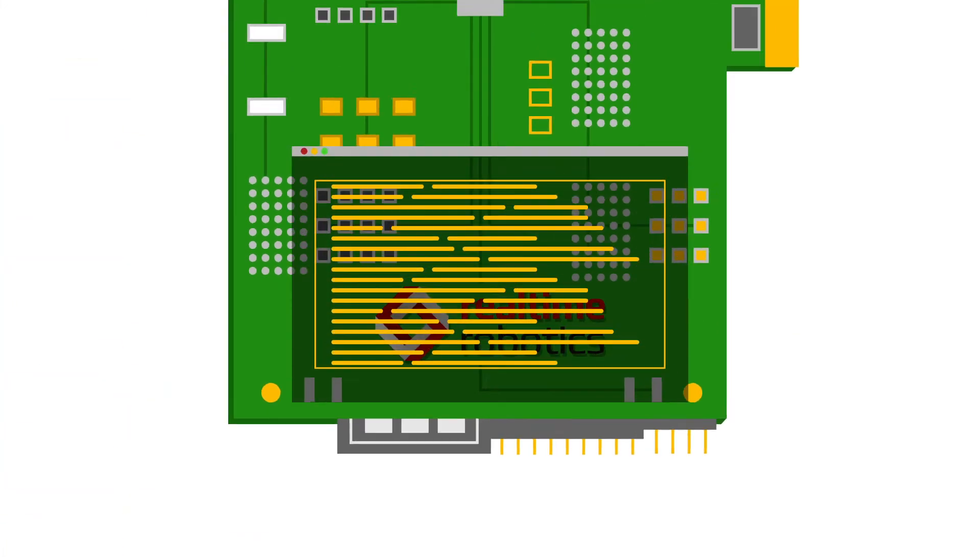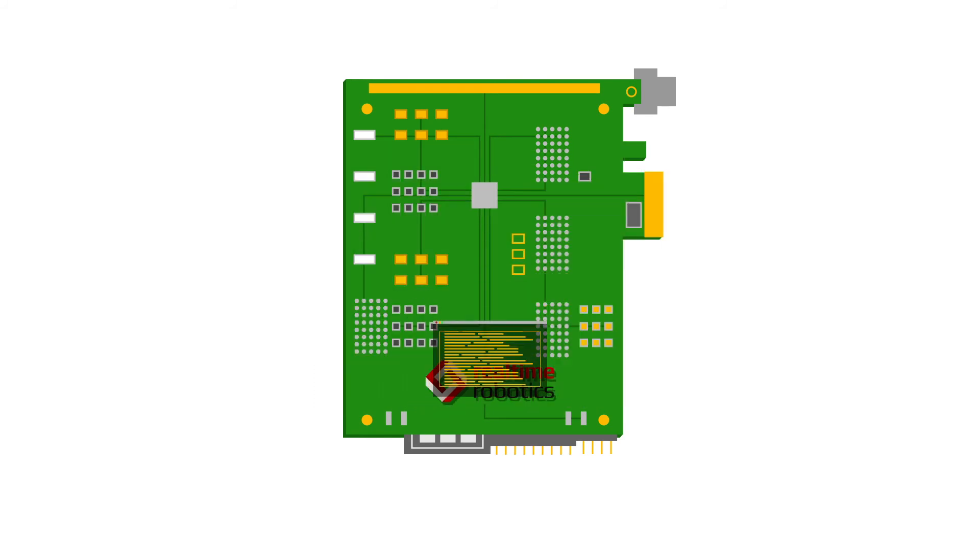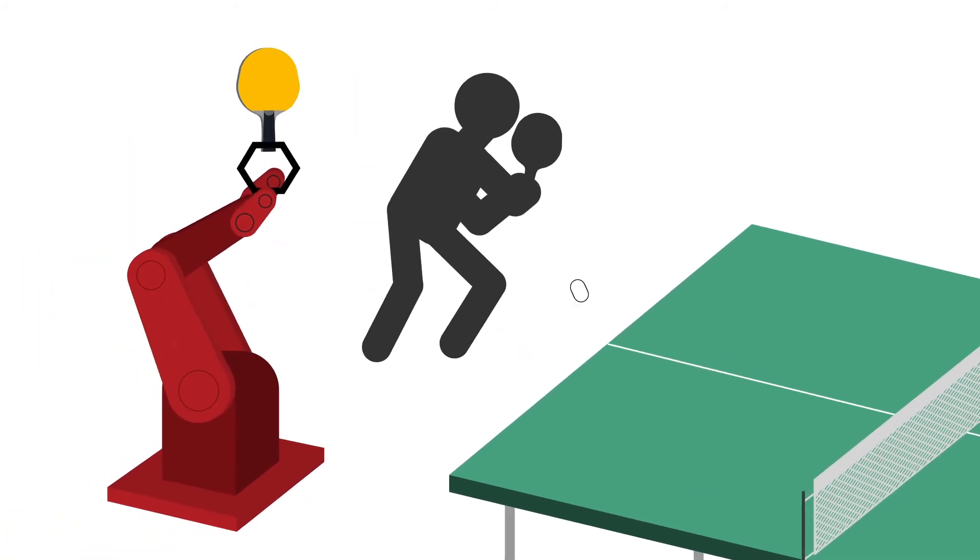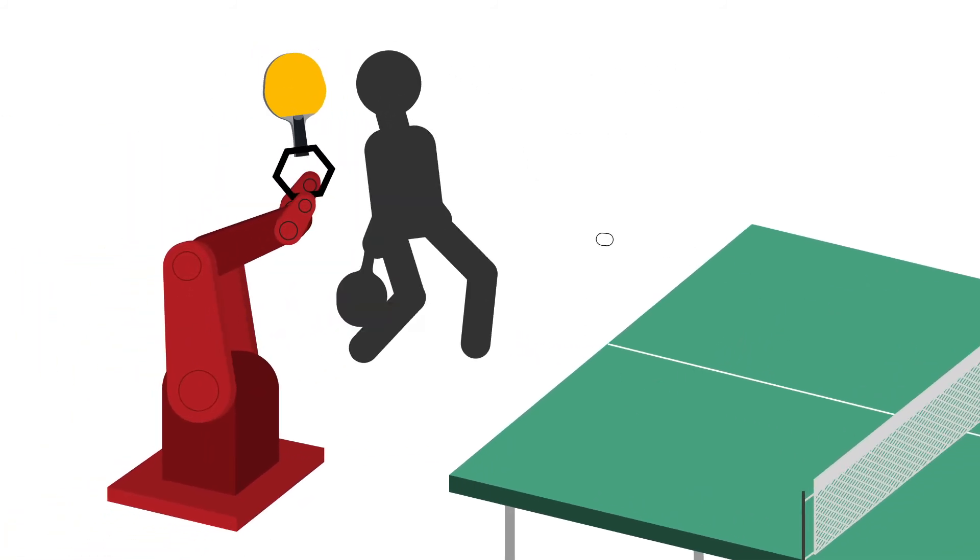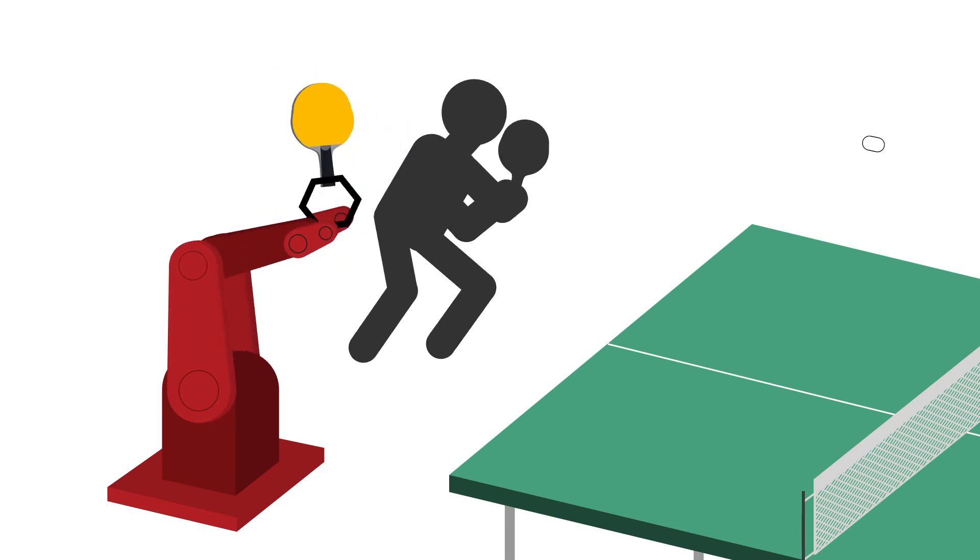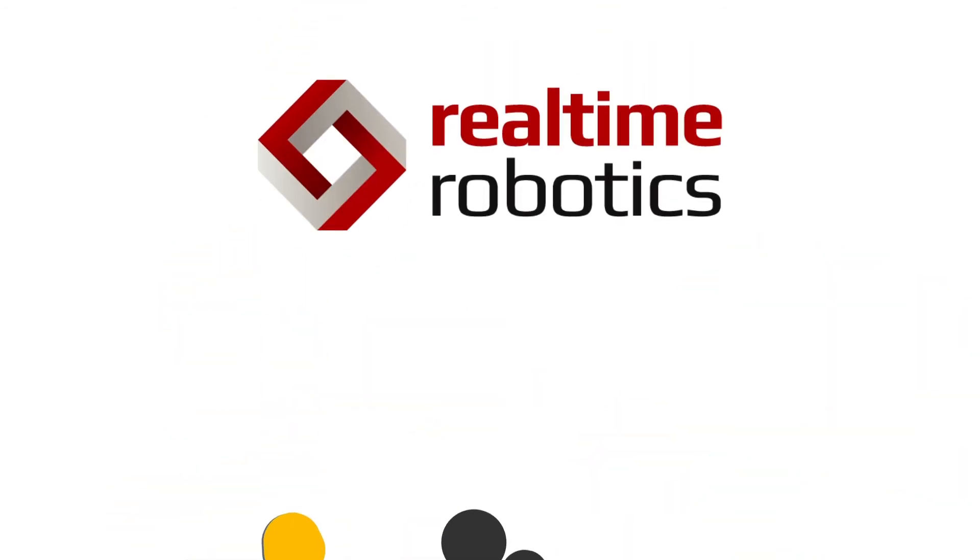Realtime's proprietary technology continuously updates motion plans to seamlessly avoid collisions based on the current situation. Learn more about how we enable robots and people to work as teammates within the same space on our website.